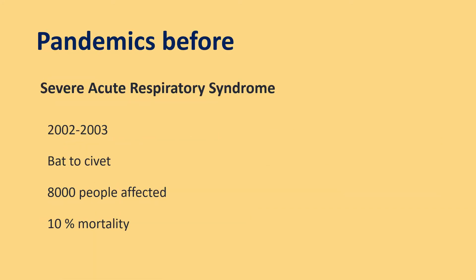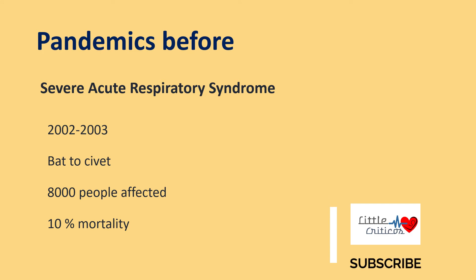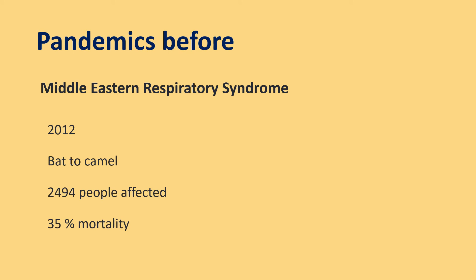Coronaviruses are known to have caused pandemics even before. Severe acute respiratory syndrome following SARS-CoV-1 was reported between 2002–2003, where transmission from bats to civet and cross-species infection to humans affected almost 8,000 people with 10% mortality. Similarly, in 2012, Middle East respiratory syndrome, where transmission occurred from bat to camel and then to humans, affected nearly 2,500 people with 35% mortality.